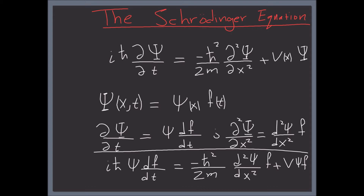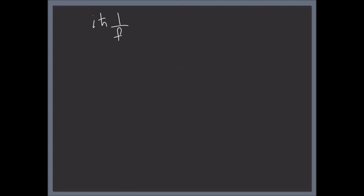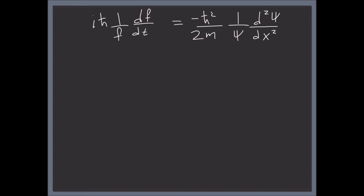Now if we divide both sides by ψF, we get on the left side: iħ·(1/F)·(dF/dt), and on the right side: −(ħ²/2m)·(1/ψ)·(d²ψ/dx²) plus the potential function V. Sometimes I'll write V, sometimes V(x) — I can oscillate between the two.